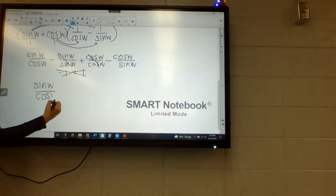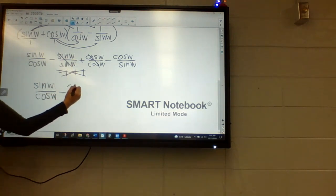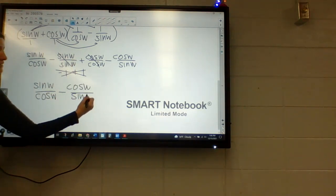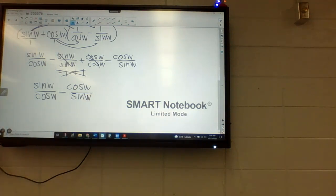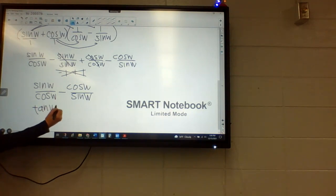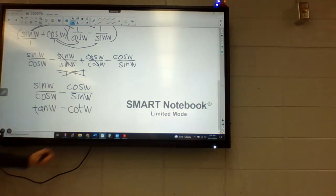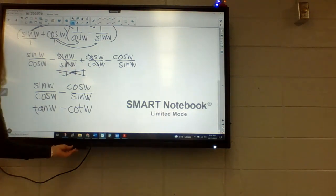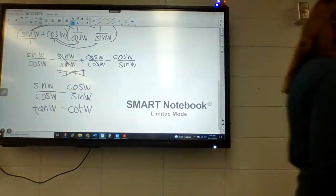So I'm going to be left with sine of W over cosine of W minus cosine W over sine of W. And I'm essentially done. Because sine over cosine is tangent, cosine over sine is cotangent. Is that what it is, right? We're trying to do it. Yeah. Can you do it? Can you do it? Yeah.